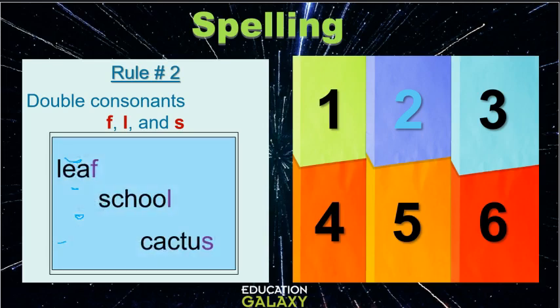Now look at these words. The word leaf ends with an F. School ends with an L and cactus ends with an S. But we don't double the F, L or S here. Why? Because each one of these have more than one vowel and cactus has two syllables. So we do not double the consonants in these words.